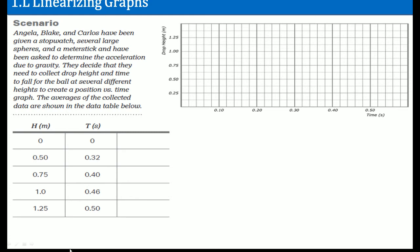Alright, welcome. This is the AP Physics Workbook Solutions. Here I'm covering 1.L, which is linearizing a graph. Here's a scenario: Angelica, Blake, and Carlos have been given a stopwatch, several large spheres, and a meter stick, and have been asked to determine the acceleration due to gravity. They decide that they need to collect drop height and the time to fall for the ball for several different heights to create a position versus time graph. The average of the collection data are shown below. Here's the height, and here is the time.